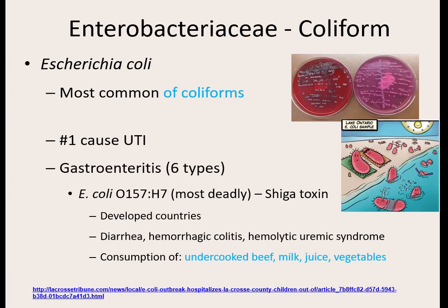E. coli is the most common of coliforms. It's very easy to identify on the MacConkey plate — it's going to show that pink colony. E. coli is the number one cause of urinary tract infections. You all have E. coli on your digestive tract right now, but if it gets out of your digestive tract into the urinary tract — and the openings aren't that far from each other — it's the number one cause of urinary tract infections.